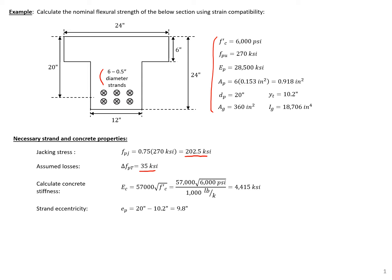That 35 KSI, you can calculate an exact value using either the PCI design handbook approach or the procedure provided in AASHTO LRFD. The calculated concrete stiffness, we need that as well. So I calculate that for us here using an ACI 318 equation. And our strand eccentricity, the distance between the center of the section and centroid of the strands equal to 9.8 inches here.